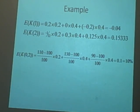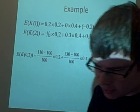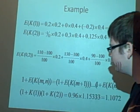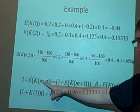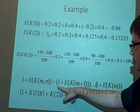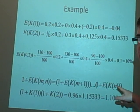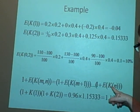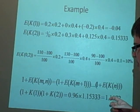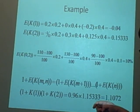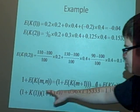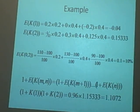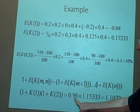Now I think it's interesting - we previously gave the definition of 1 plus K(m,n) equals 1 plus K(m+1) times 1 plus K(m+2) and so on up to 1 plus K(m), but it doesn't work when you put expectations in it. I've calculated these for a reason. We've got the minus 0.04 which gives us 0.96.